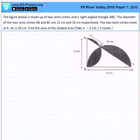The figure below is made up of two semicircles and a right-angled triangle ABC. The diameter of the two semicircles AB and BC are 12 cm and 16 cm respectively. The two semicircles meet at X. AC is 20 cm. Find the area of the shaded area.